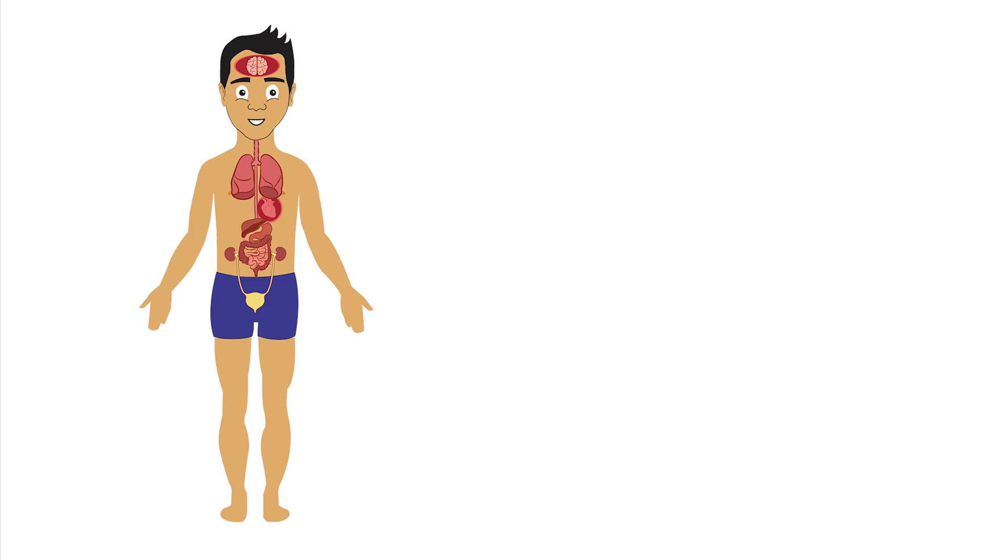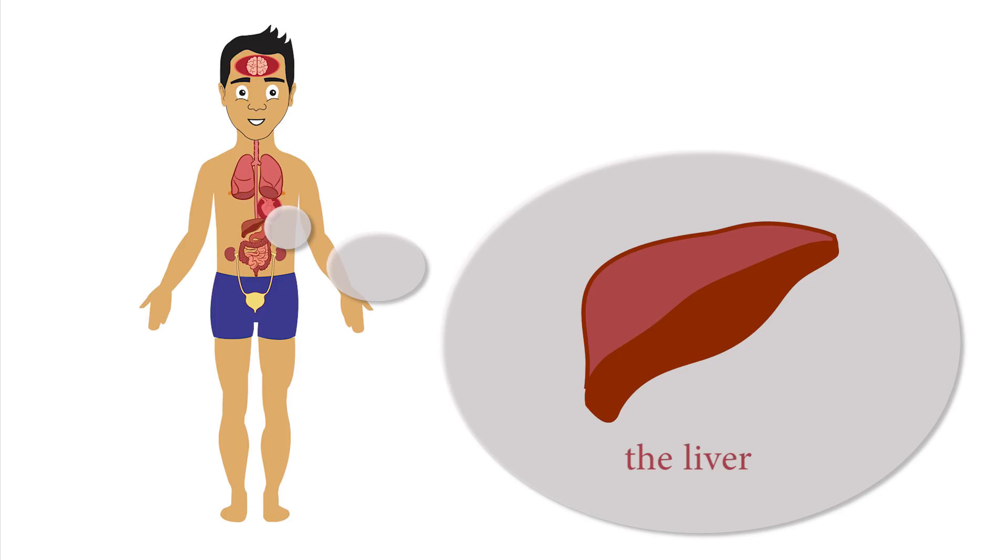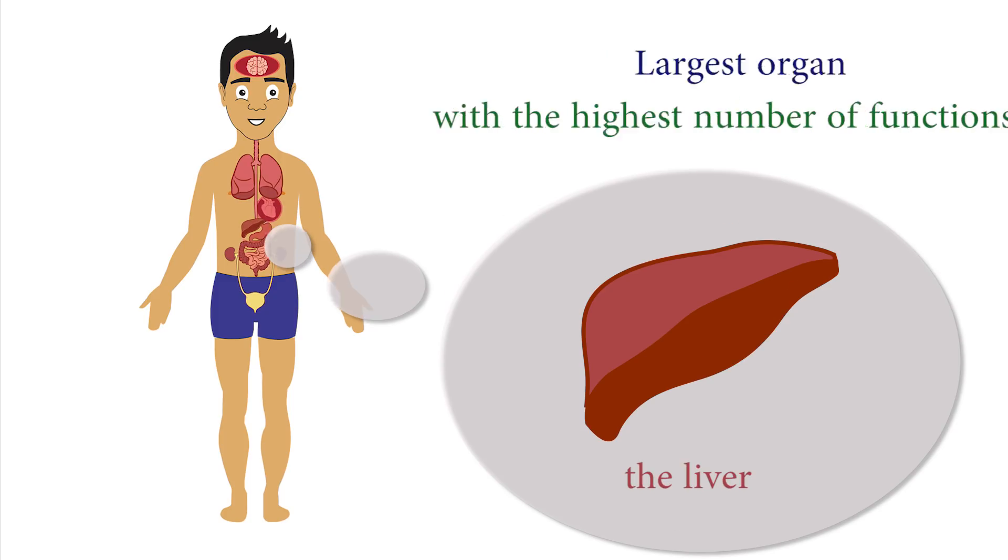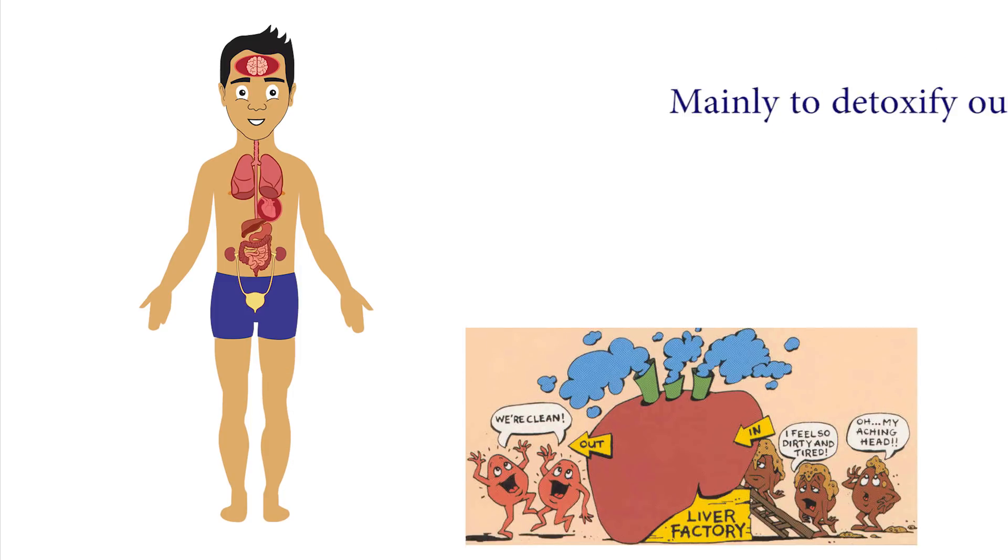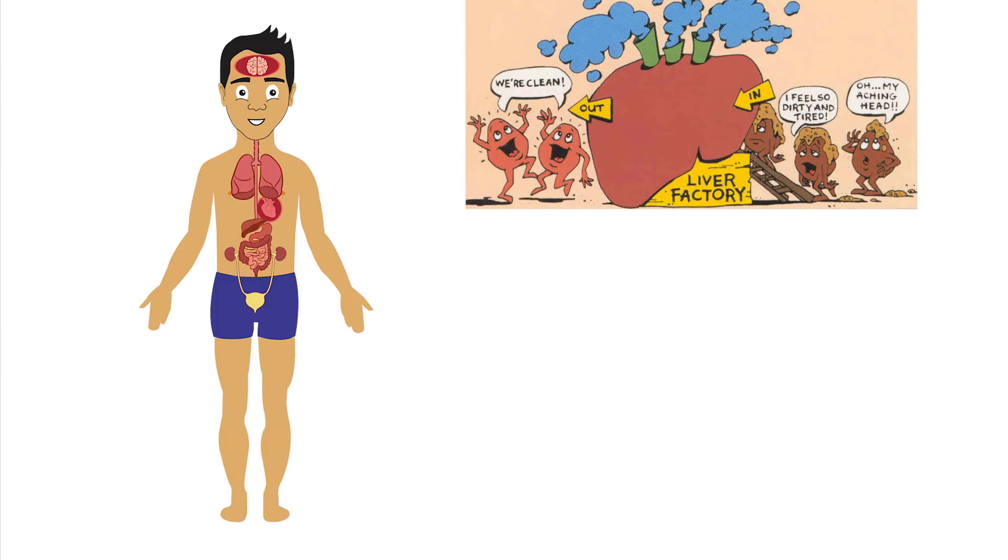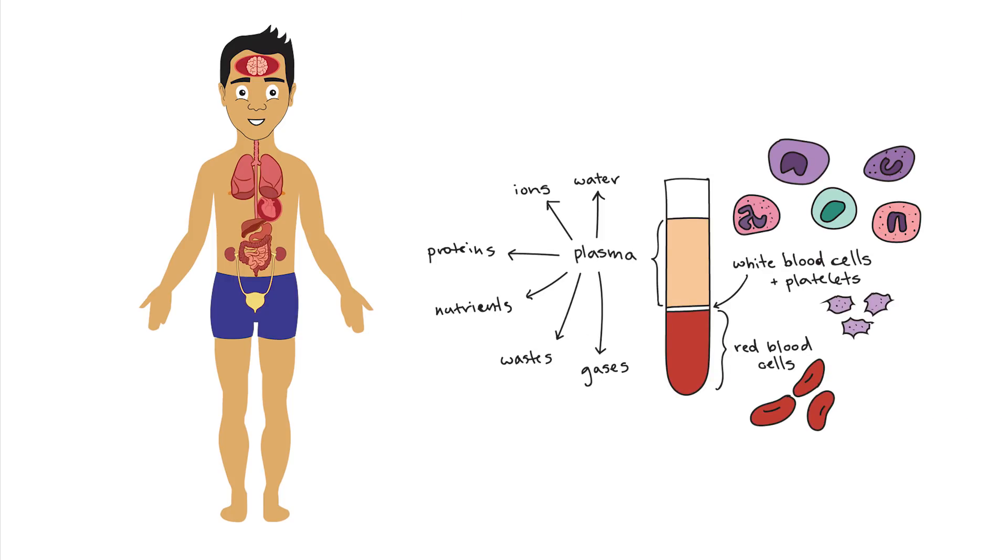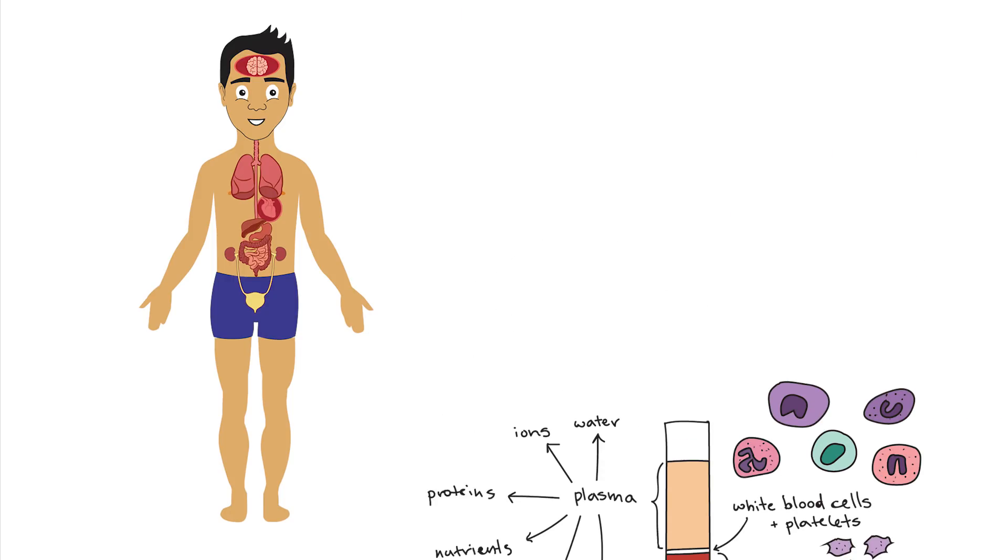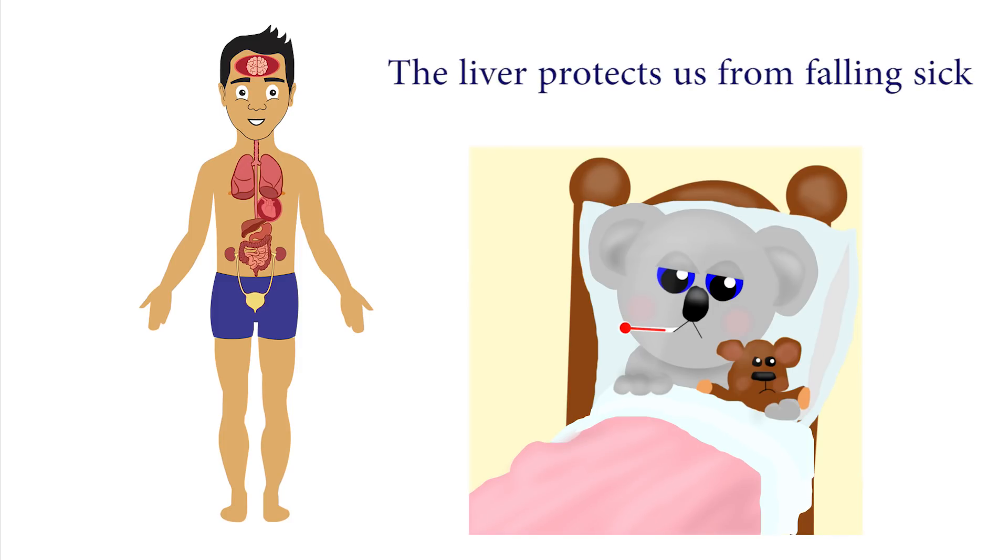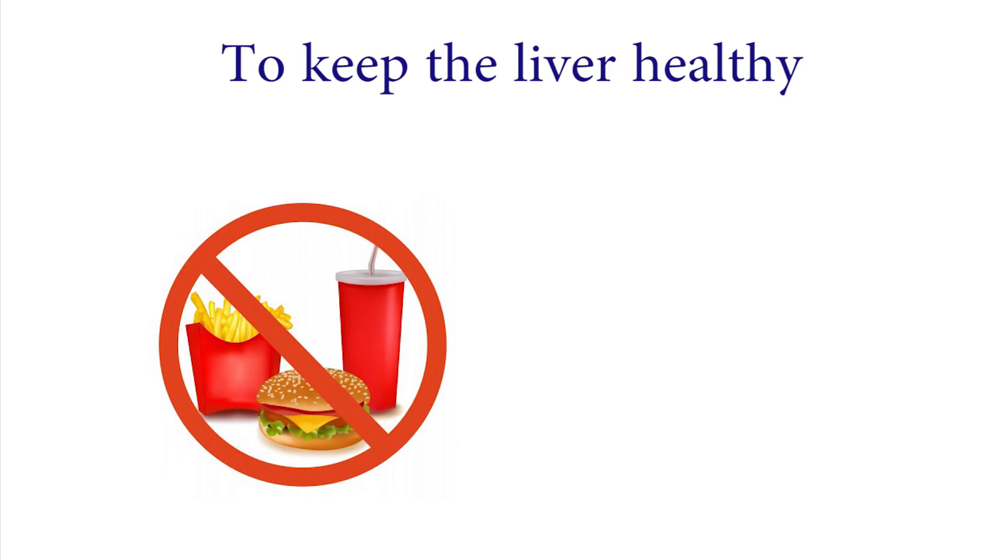Next is the liver. The liver is found on the right side of our abdominal cavity and is the largest organ in our body with the highest number of functions, but mainly to detoxify our body and ensure that our blood composition remains the same. The liver protects us from falling sick. To keep the liver healthy, we must stop eating unhealthy foods and eat a balanced diet.